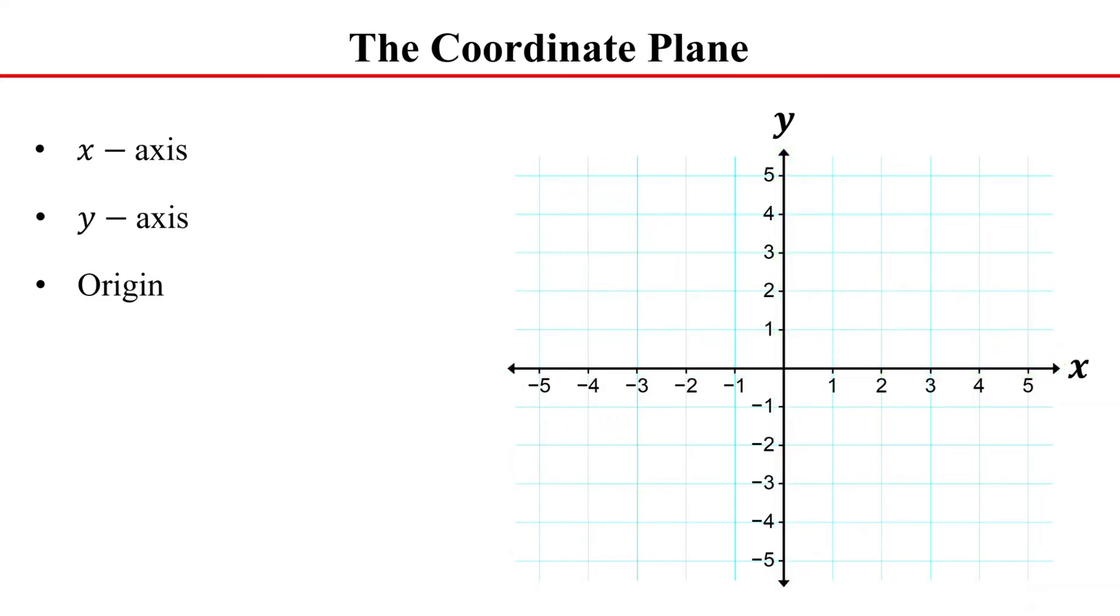In the coordinate plane, each point is represented by coordinates, also known as an ordered pair, written as x comma y. The first number in an ordered pair is the x-coordinate and the second number is the y-coordinate.